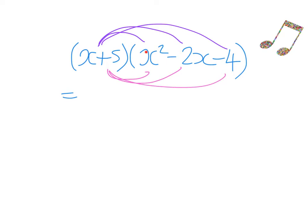We start with x times x squared, which gives us x cubed. Then x times negative 2x: positive x multiplied by negative 2x gives a negative answer, so we have negative 2x squared. Then x times the negative 4 — positive x and negative 4 — when multiplied together gives negative 4x.